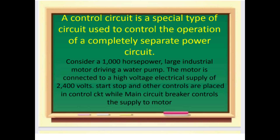For example, consider a 1000-horsepower large industrial motor driving a water pump. The motor is connected to a high-voltage electrical supply of 2400 volts. Start, stop, and other controls are placed in the control circuit, while the main circuit breaker controls the supply to the motor. A control circuit is a special type of circuit used to control the operation of a completely separate power circuit.